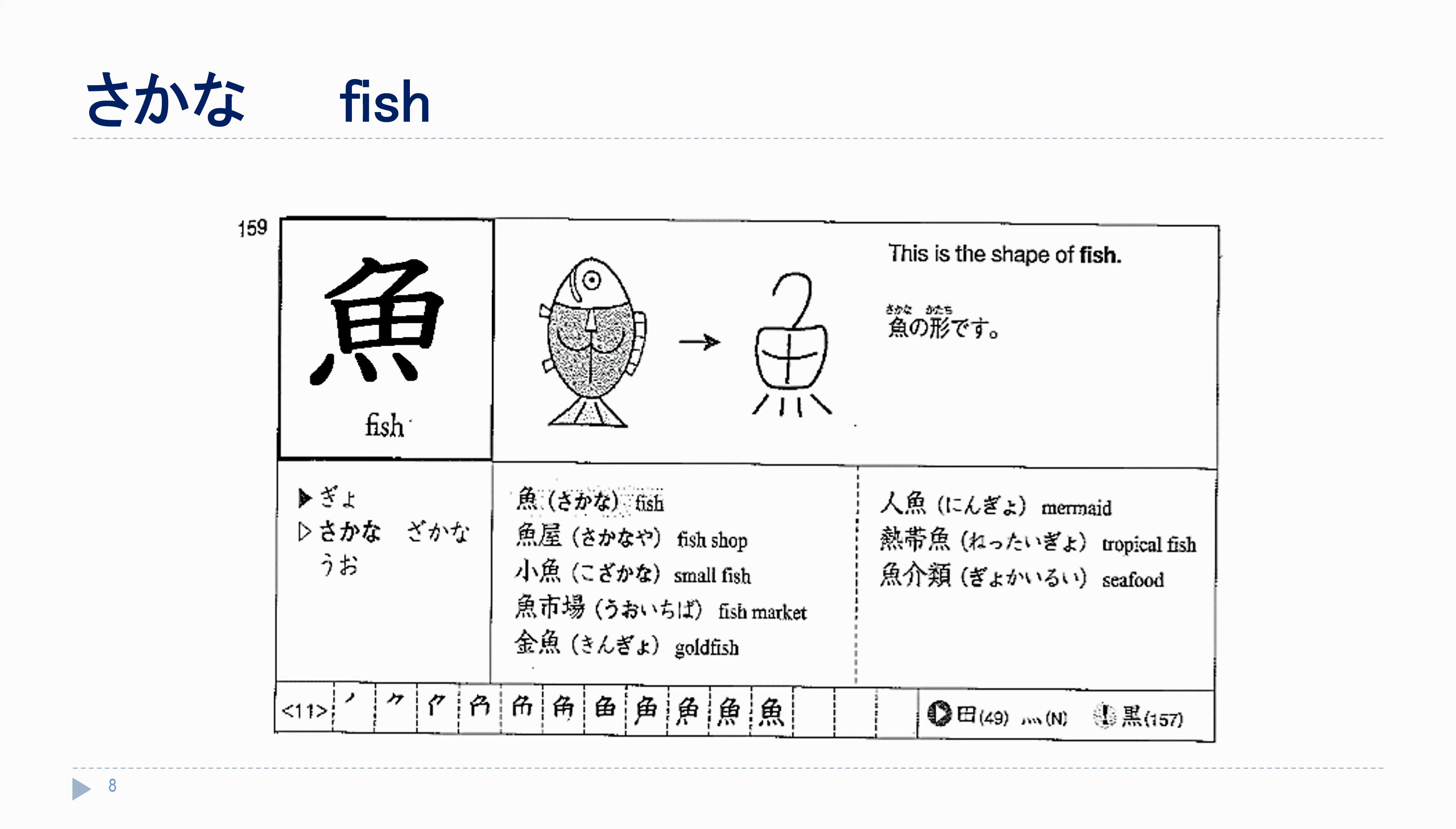As with kuroi, careful of the direction for these last four strokes. Once more. いちにさんよんgo, roku, nana, hachi, kyu, jiu, jiuichi.